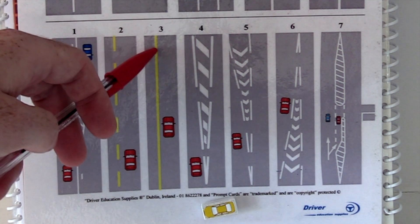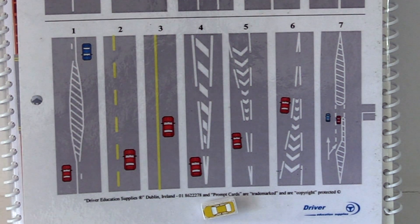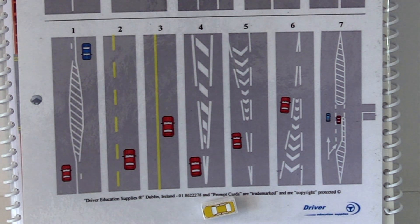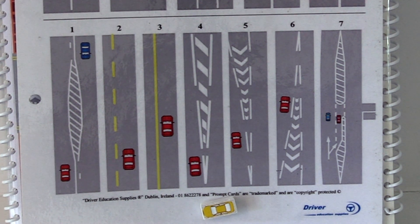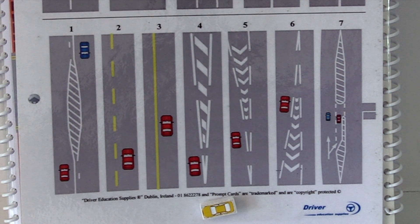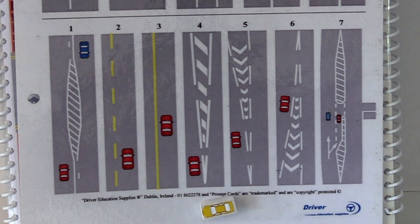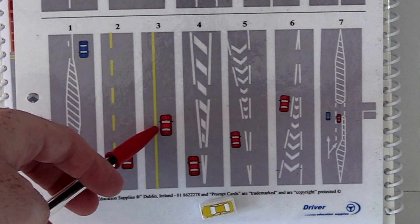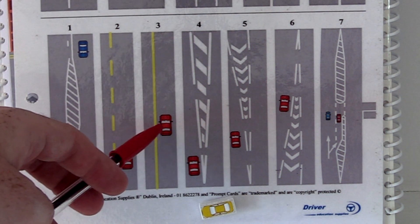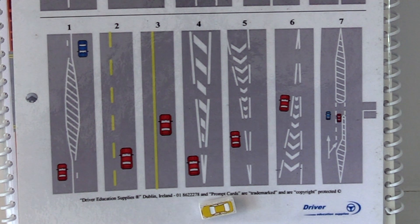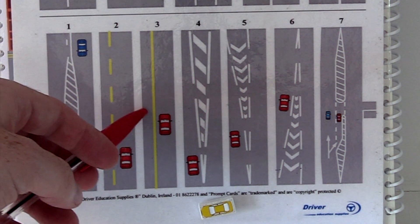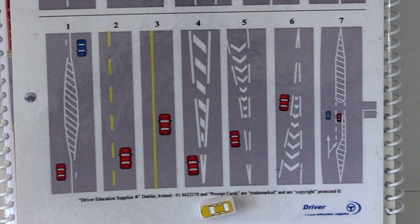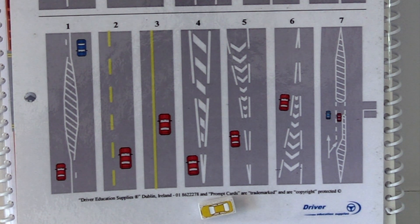The continuous yellow line is normally found on a motorway or certain other roads where it's dangerous to stop. It marks the edge of the road, and you're not allowed to park or stop to the left of the solid yellow line, unless in an emergency or if a guard instructs you to do so.